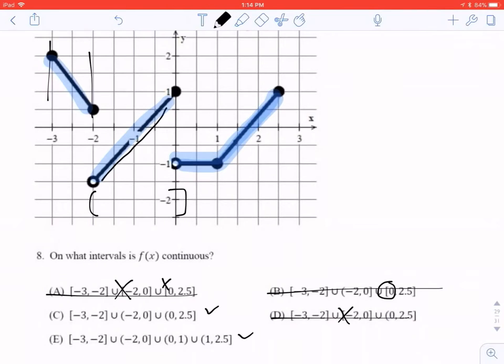B doesn't work because it's supposed to not include the 0. So we know it's not B. We know it's not here. We know it's not here. Let's look at C and E a little bit closer. So, just reading C, it says it starts at negative 3 and goes to negative 2. It includes that. I agree. Then it starts at negative 2, doesn't include it, and goes to 0 and includes it. I agree. Starts at 0, doesn't include it, and goes to 2.5. So I'm thinking it's going to be C. E says a very similar thing, but E is breaking this into two different intervals, saying it's not continuous at 1, which is false. So the answer is definitely C.